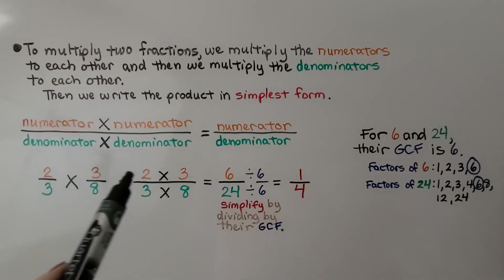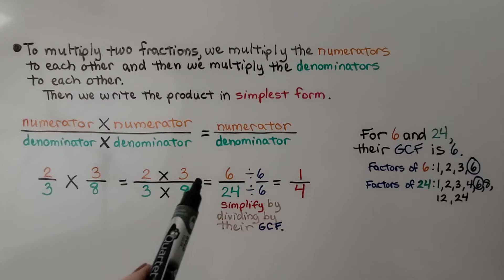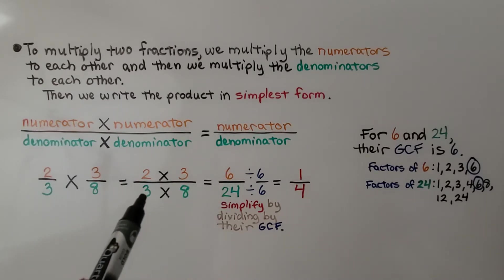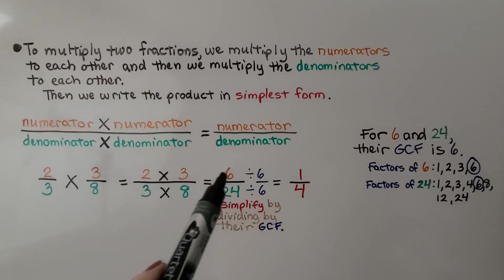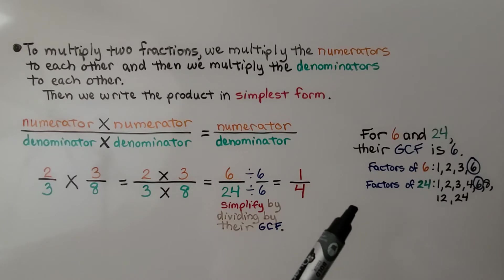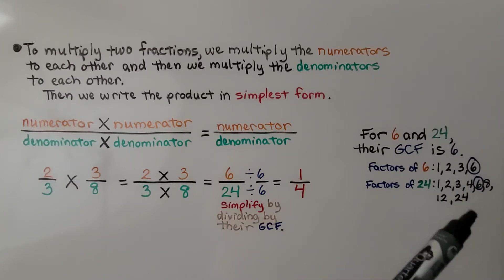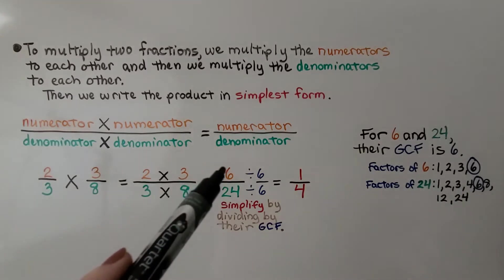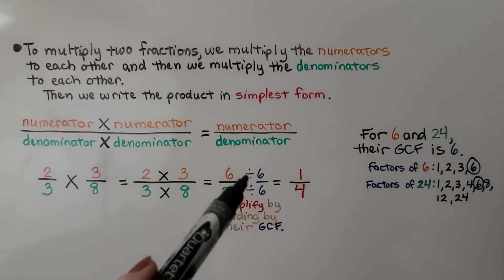We have 2 times 3. We can write it with one long fraction bar. That's equal to 6. Then we do the denominator, 3 times 8, and get 24. We simplify by dividing by their GCF. For 6 and 24, their GCF is 6. We list the factors of 6 and the factors of 24, and we get 6 as their greatest common factor. That means we divide the numerator and denominator both by 6, and we get 1 fourth. Now it's simplified.